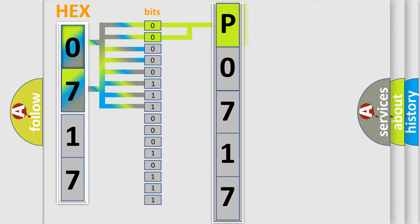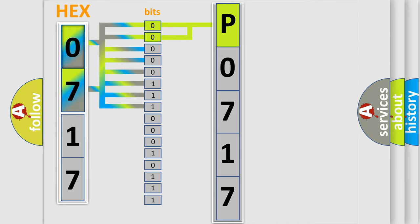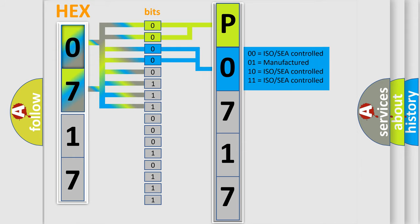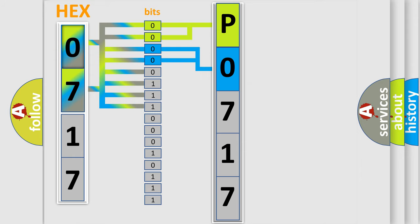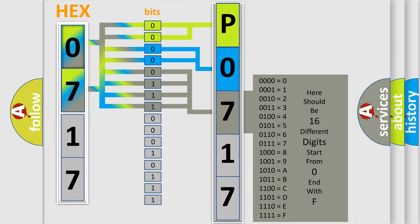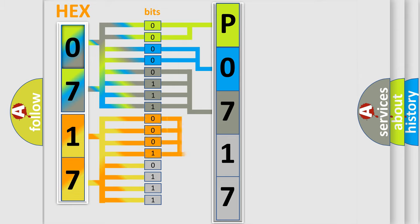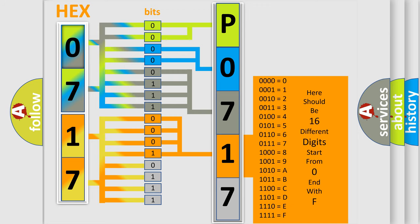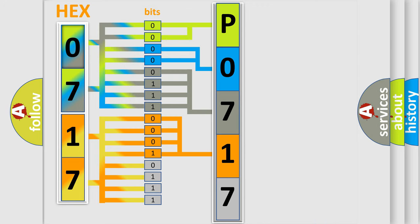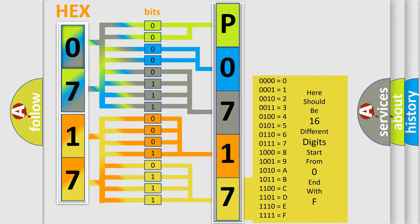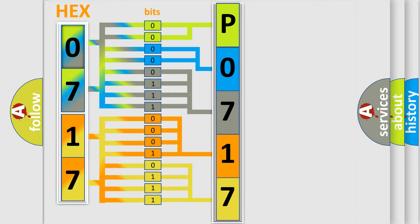By combining the first two bits, the basic character of the error code is expressed. The next two bits determine the second character. The last four bits of the first byte define the third character of the code. The second byte is composed of a combination of eight bits. The first four bits determine the fourth character, and the combination of the last four bits defines the fifth character. A single byte conceals 256 possible combinations.